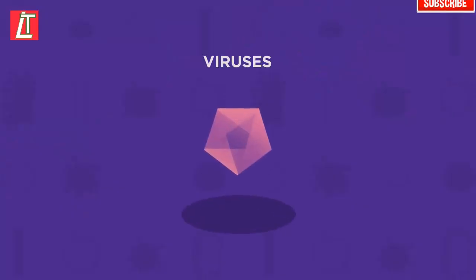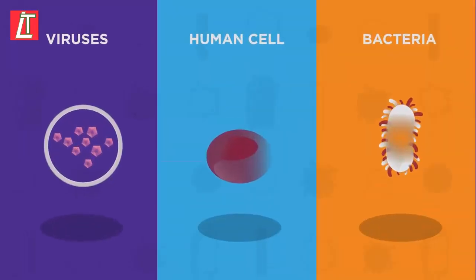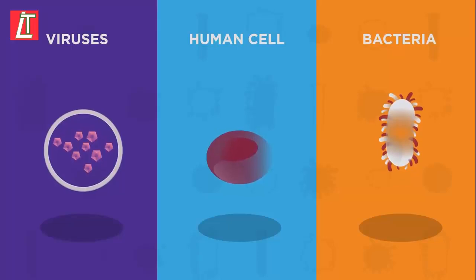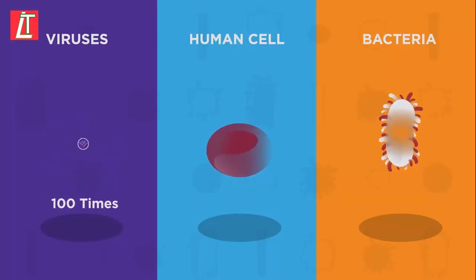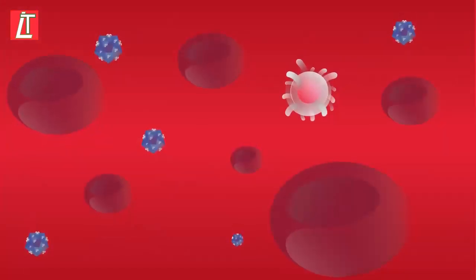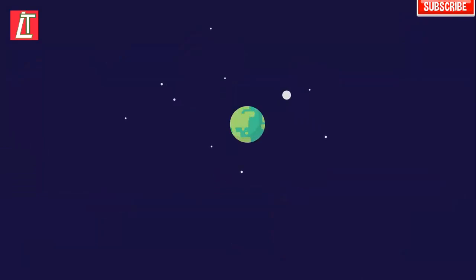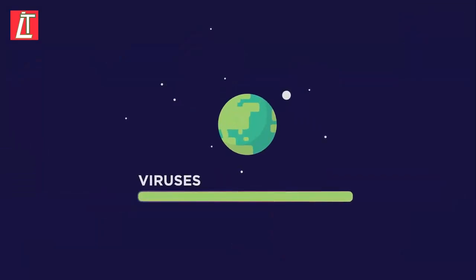In this video, we're going to look at what viruses are. Viruses are a type of microorganism. They are too small to be seen by the naked eye, much smaller than bacteria and about 100 times smaller than human cells. They come in many different shapes and are present wherever there are cells to infect. In fact, viruses are the most common biological unit on Earth, outnumbering all other types combined.